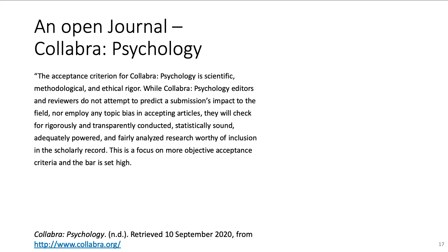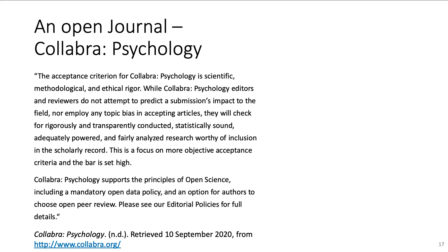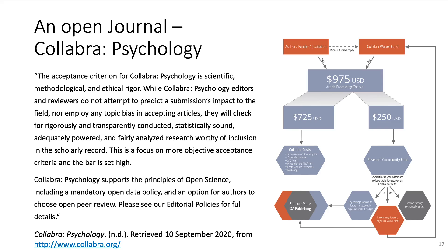Here is an excerpt from the editorial policy of Collabra Psychology. The acceptance criterion for Collabra Psychology is scientific, methodological and ethical rigor. While Collabra Psychology editors and reviewers do not attempt to predict a submission's impact to the field nor employ any topic bias in accepting articles, they will check for rigorously and transparently conducted, statistically sound, adequately powered and fairly analyzed research worthy of inclusion in the scholarly record. This is a focus on more objective acceptance criteria, and the bar is set high. Collabra Psychology supports the principles of open science, including a mandatory open data policy and an option for authors to choose open peer review. It also uses a sustainable non-profit business model which uses article processing charges only to cover costs, support open science or pay reviewers and editors.